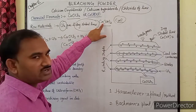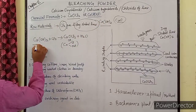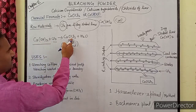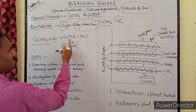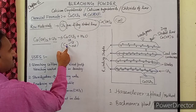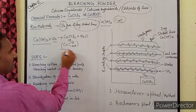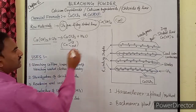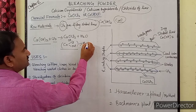Chlorine gas is obtained by electrolysis of brine solution where at the anode chlorine gas is produced. We take this chlorine gas and dry slaked lime, so our reaction will be: Ca(OH)₂ + Cl₂ → CaOCl₂ + H₂O. The product CaOCl₂ is bleaching powder, which is a mixed salt.